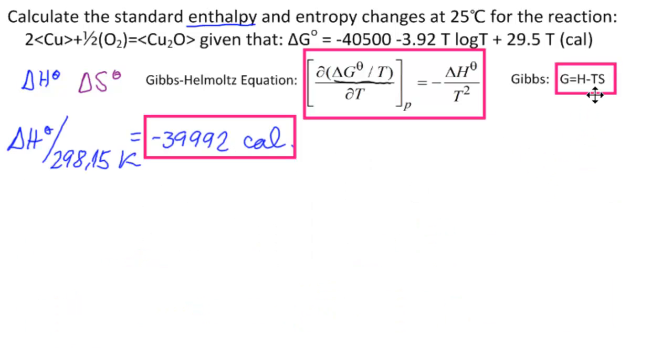Now, in the second part of the question, we're looking for the standard entropy change, delta S theta. So we get delta G theta under constant pressure is equal to delta H theta minus T times delta S theta. So delta S theta is equal to minus 1 over T times delta G theta minus delta H theta.